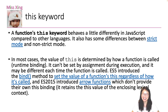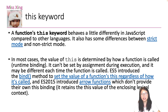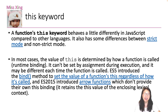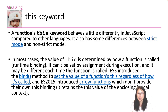From MDN: 'A function's `this` keyword behaves differently in JavaScript compared to other languages like Java.' Java's `this` keyword is very simple — it just refers to the object inside the method, and it's optional. But in JavaScript, `this` is not optional and represents different things in different execution environments, based on different contexts. There are also differences between strict mode and non-strict mode.